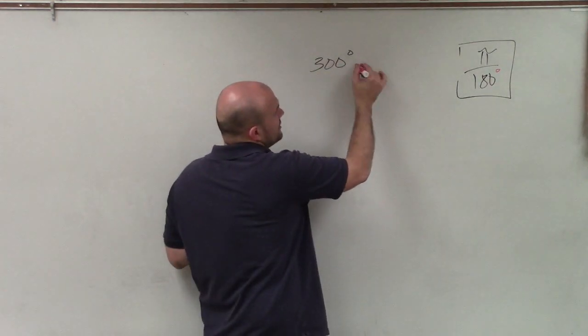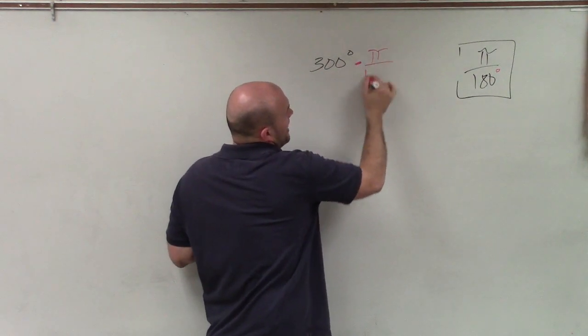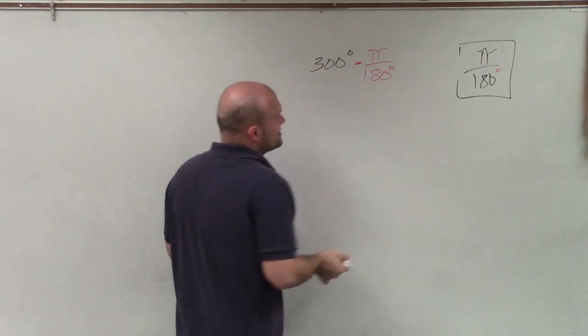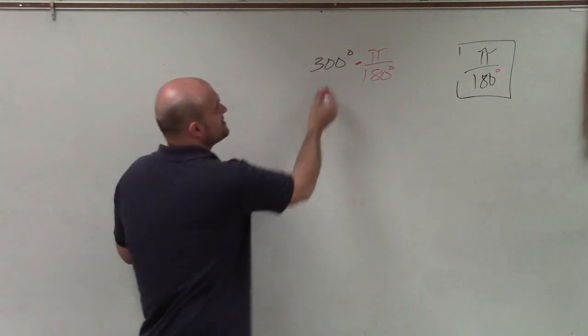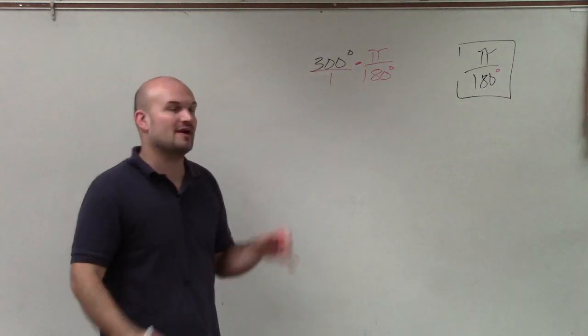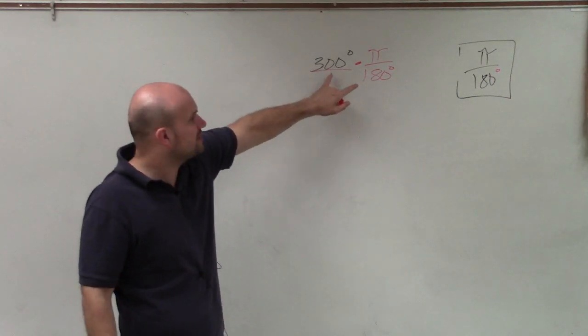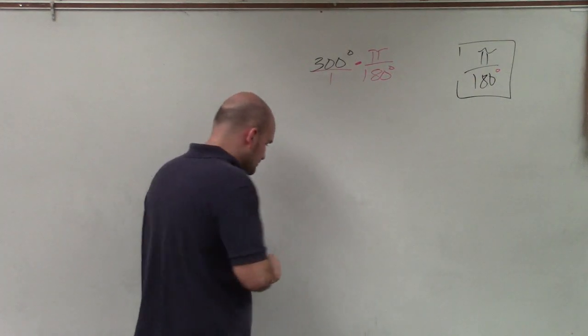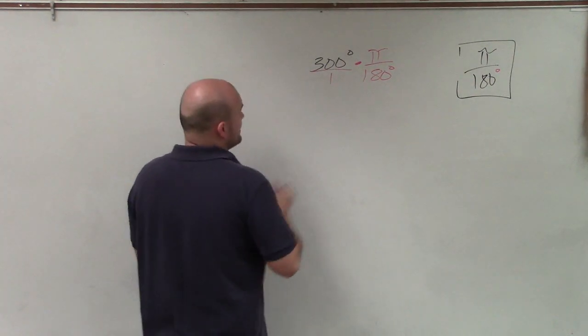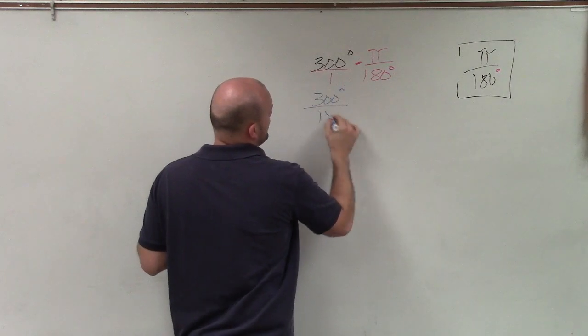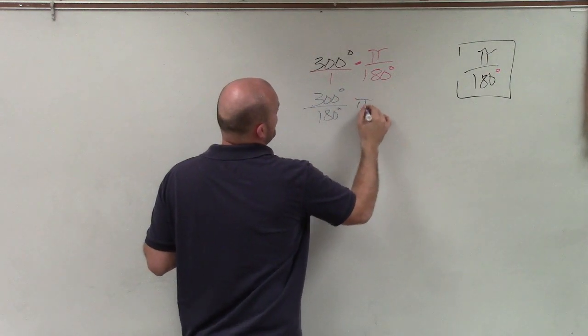So I'll multiply 300 degrees times pi over 180 degrees. And when multiplying, this is a whole number, but we can rewrite it as a fraction. However, I want to reduce the 300 over 180, so I'm going to write them over each other: 300 degrees over 180 degrees times pi.